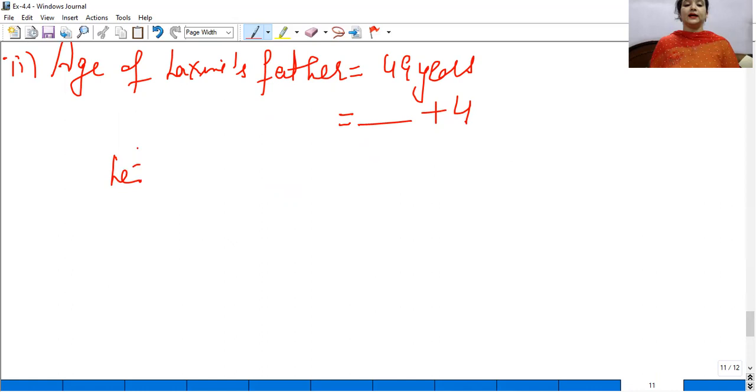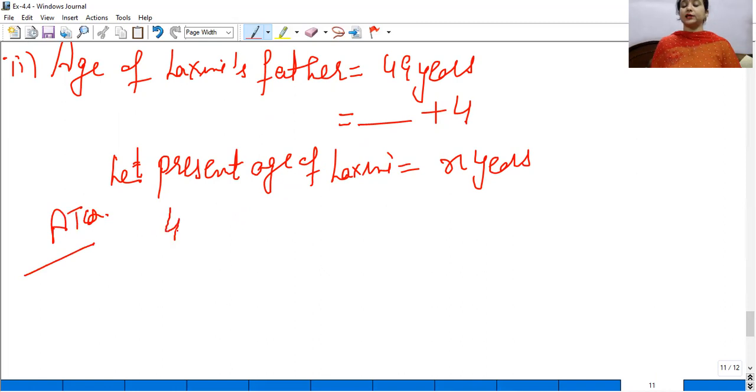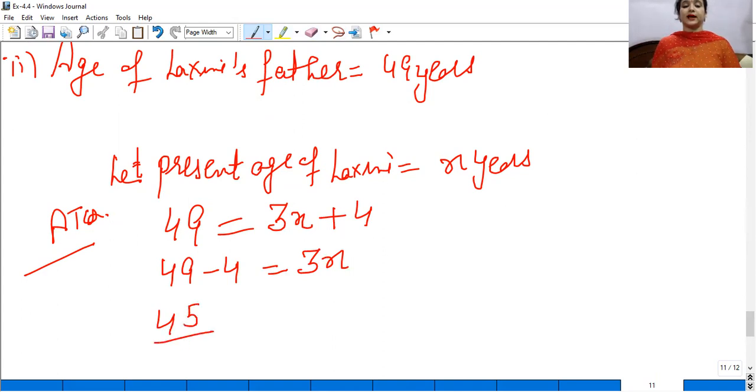So, Lakshmi's father is 49 years old. Lakshmi's age is 3 times plus 4 more, so 3x plus 4. Now find the age of Lakshmi. 49 minus 4 equals 45.